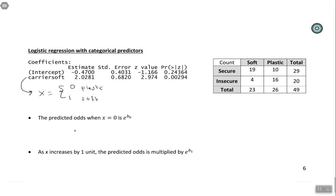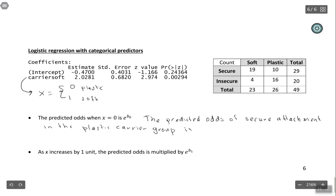So usually the way we would interpret the intercept is that the predicted odds when x equals 0 is e raised to the power of the intercept. So what does it mean in this context when x equals 0? x equals 0 refers to the plastic group. So here we would say that the predicted odds of secure attachment, that's how we defined our success here, the predicted odds of secure attachment in the plastic carrier group is e to the intercept. So e to the negative 0.47, which comes out to be 0.625.